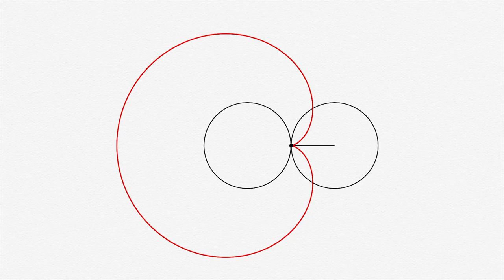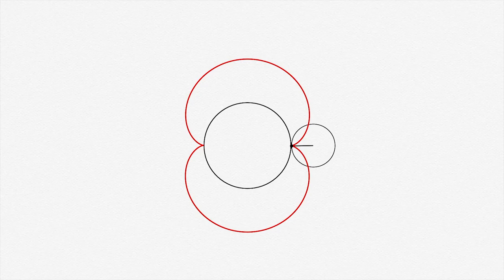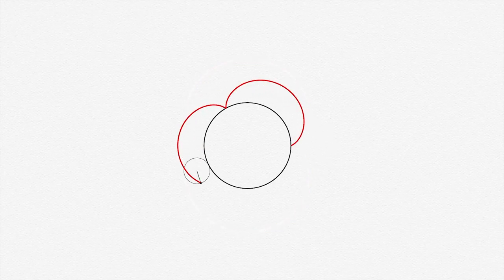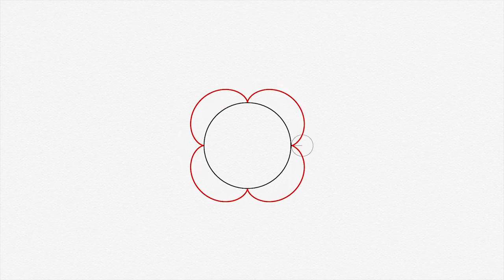If the rolling circle has half the larger's radius, you'll get a two-cusped epicycloid, the shape of which is called a nephroid because it apparently looks like a kidney, I guess. One-third the radius gives you three cusps, one-fourth four cusps, and so on.